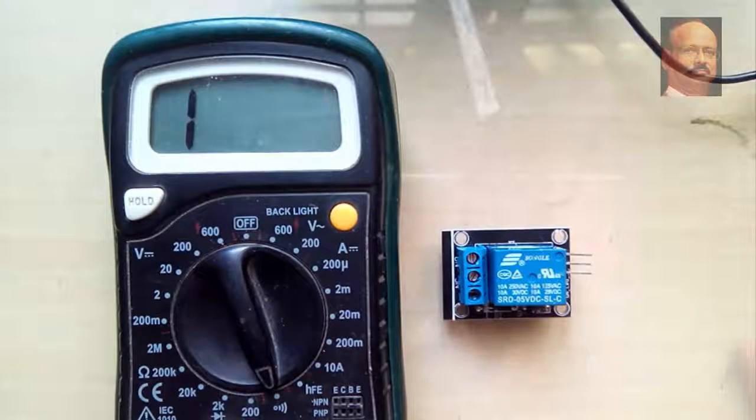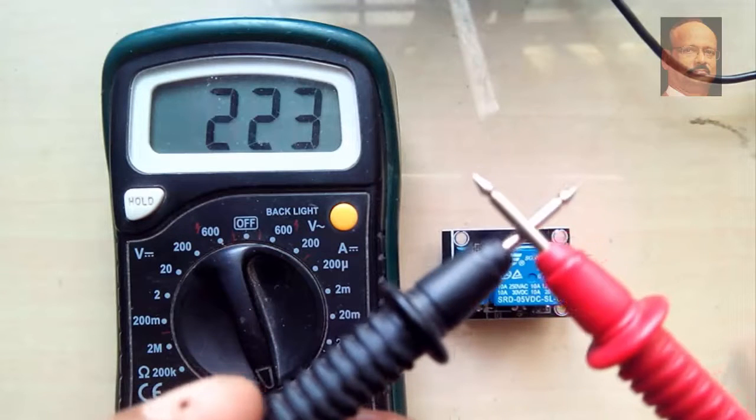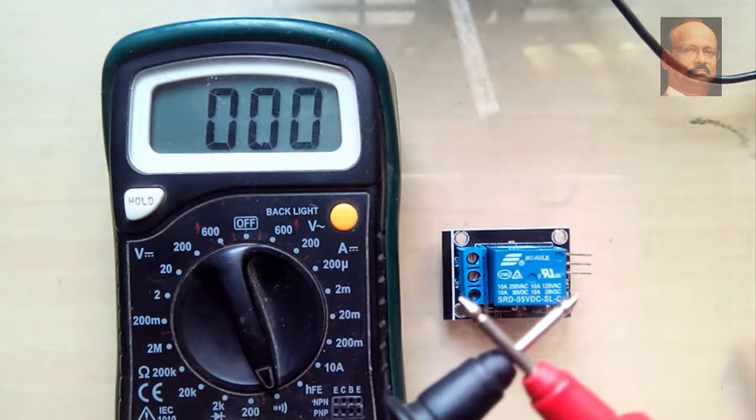So what we do, we take a multimeter in the buzzer mode and then when we touch it, we notice that it gives a sound, we can listen to the sound.